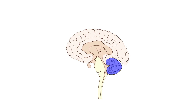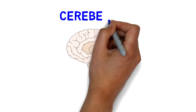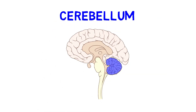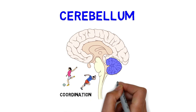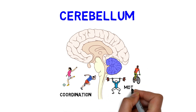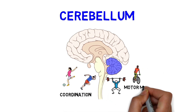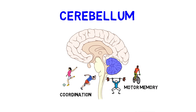Behind the brain stem, at the back of the brain, we have the cerebellum — the little brain. Its function is motor control. When you play sports it is the cerebellum that gives you coordination and balance. It also gives you motor memory. So when you ride a bike and remember to pedal without losing your balance, it's thanks to your cerebellum.